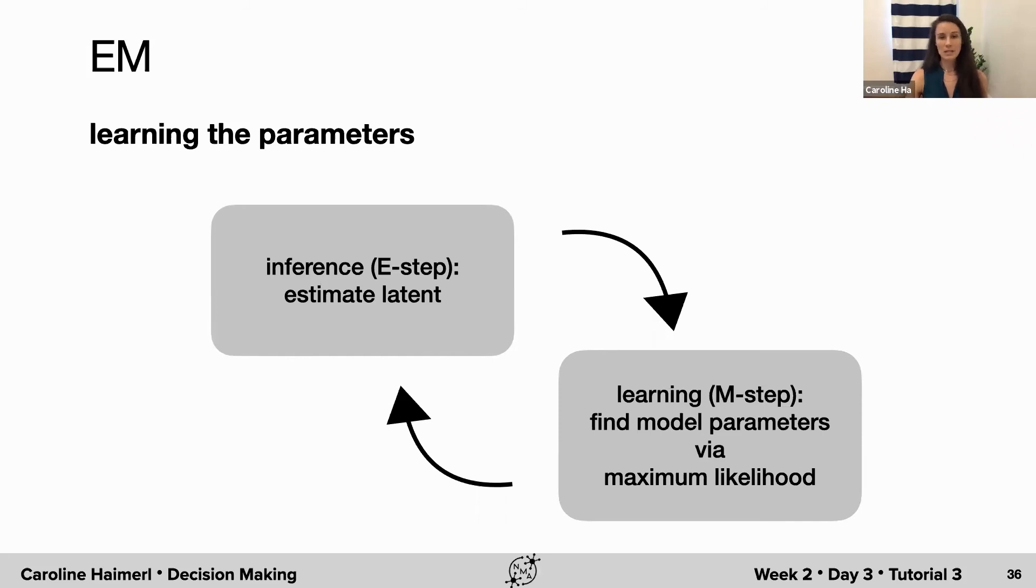Within each iteration, we converge to a better solution here. The E-step is essentially what you have already implemented, so the Kalman filter plus the smoothing step that I mentioned.